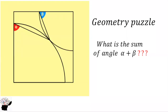Welcome to my YouTube channel. Today we consider this geometric puzzle proposed by Katrona on Twitter. We have two quarter circles and we are supposed to find the sum of angle alpha and angle beta. How can we solve this geometric puzzle?